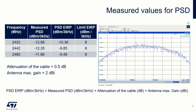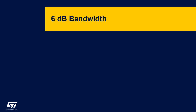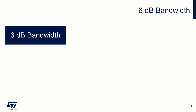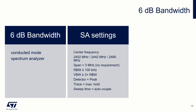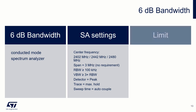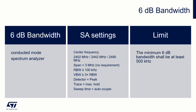Now we focus on 6 dB bandwidth. The 6 dB bandwidth is defined as the difference between the upper and lower frequencies that are minus 6 dB relative to the peak. We use a spectrum analyzer and measure in conducted mode. Measurements are performed on 3 channels: low, middle and high. Once the signal has stabilized, set the marker to the maximum amplitude level to read its value. Reduce this value by 6 dB and read the frequencies corresponding to the appropriate 6 dB points on the signal envelope. The 6 dB bandwidth limit is 500 kHz; thus the bandwidth must be greater than 500 kHz.